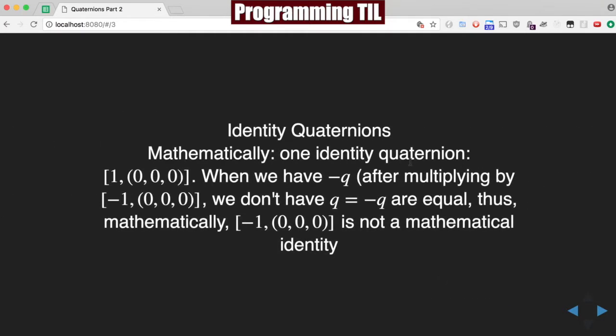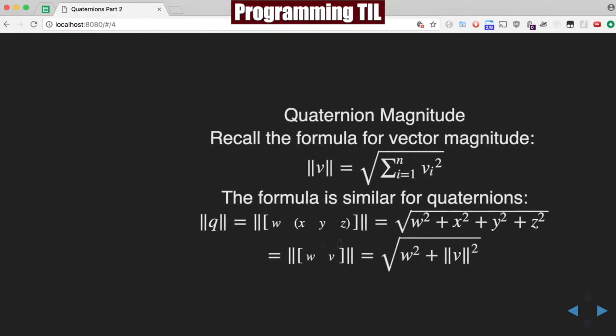So, mathematically, we only have one identity quaternion, which is the positive version, because when we have a negative q after multiplying by the negative 1, we don't have q is equal to negative q. These aren't equal mathematically. So in the math world, negative 1 does not count as an identity, but we'll be using it for our purposes.